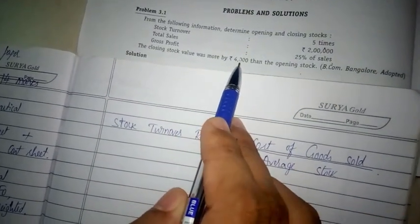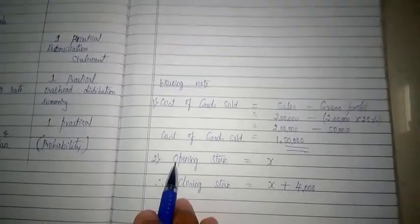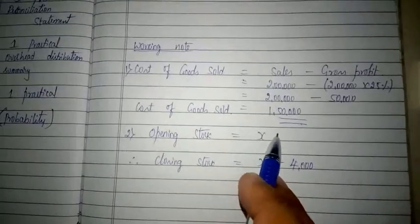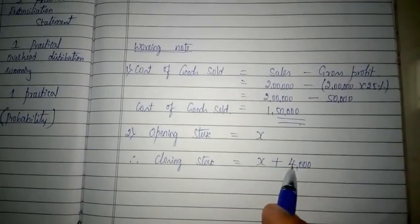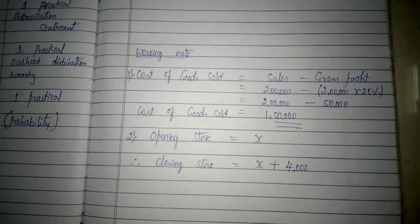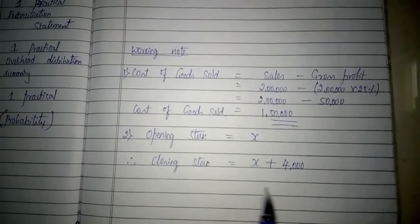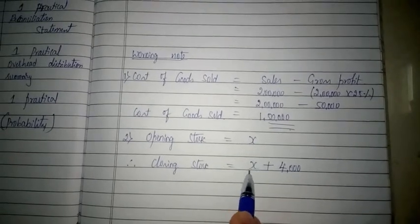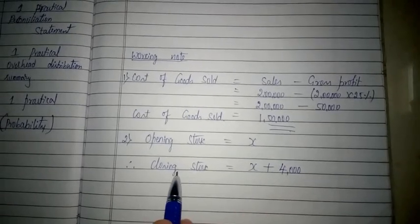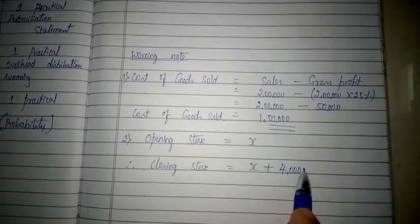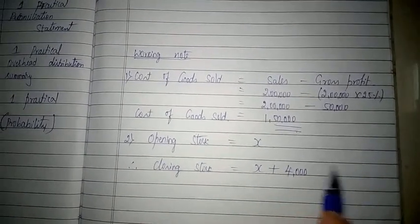They have stated that closing stock value was more by 4,000 than the opening stock. Therefore, let us write opening stock as x. If opening stock is x, then closing stock will be x plus 4,000, because closing stock is 4,000 more than the opening stock. So x represents opening stock and x plus 4,000 represents closing stock.